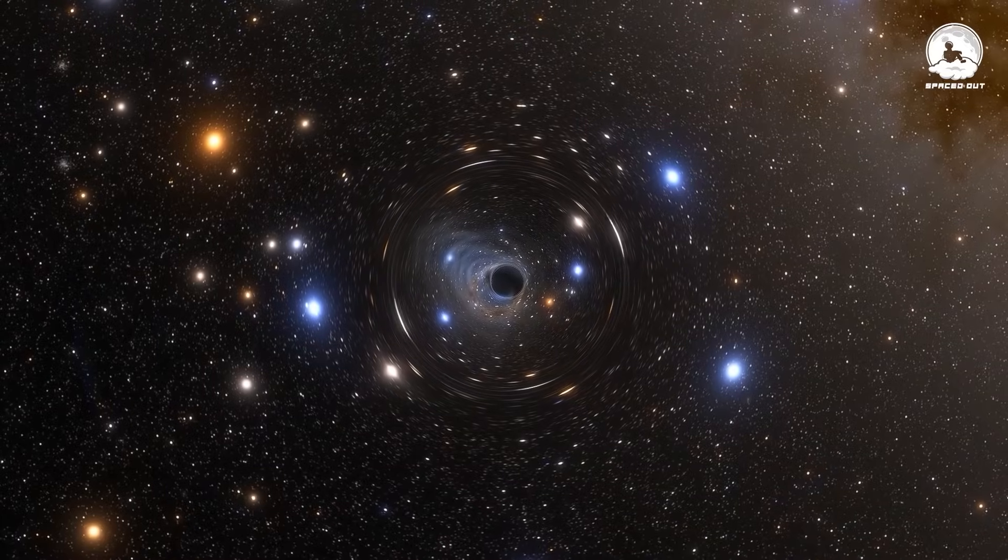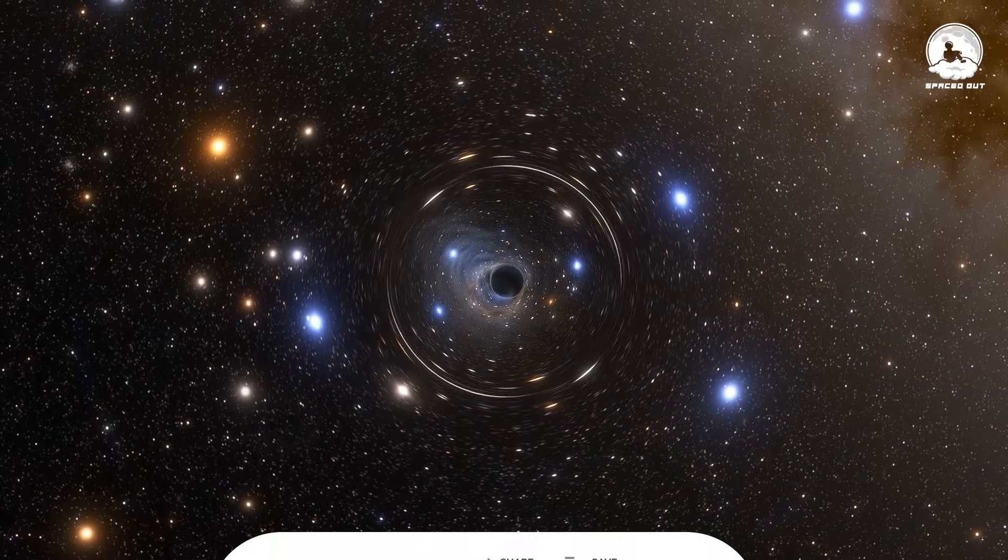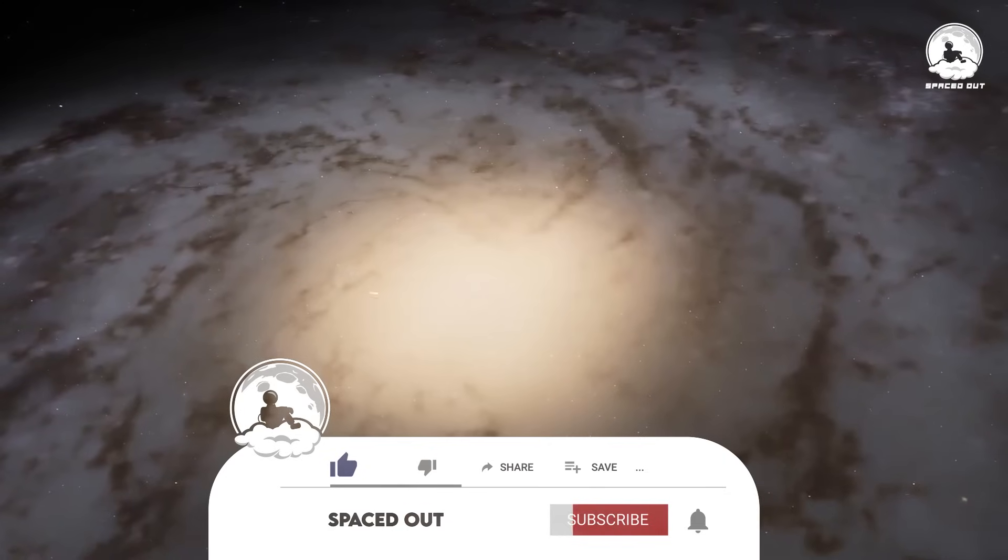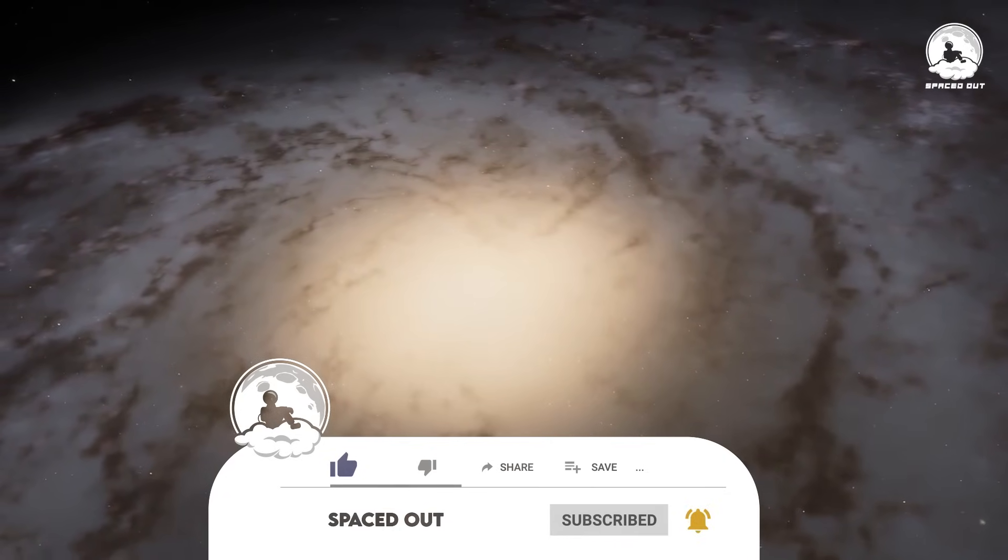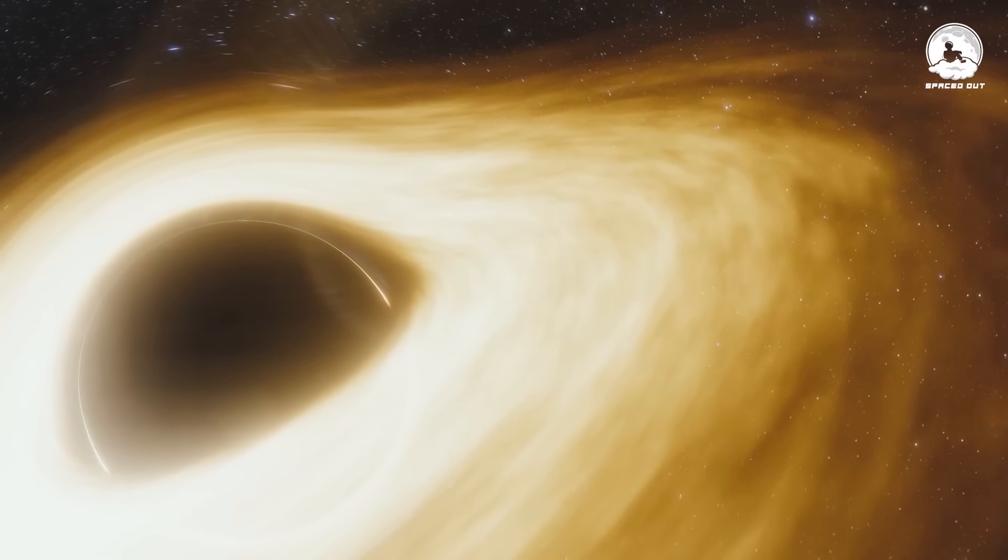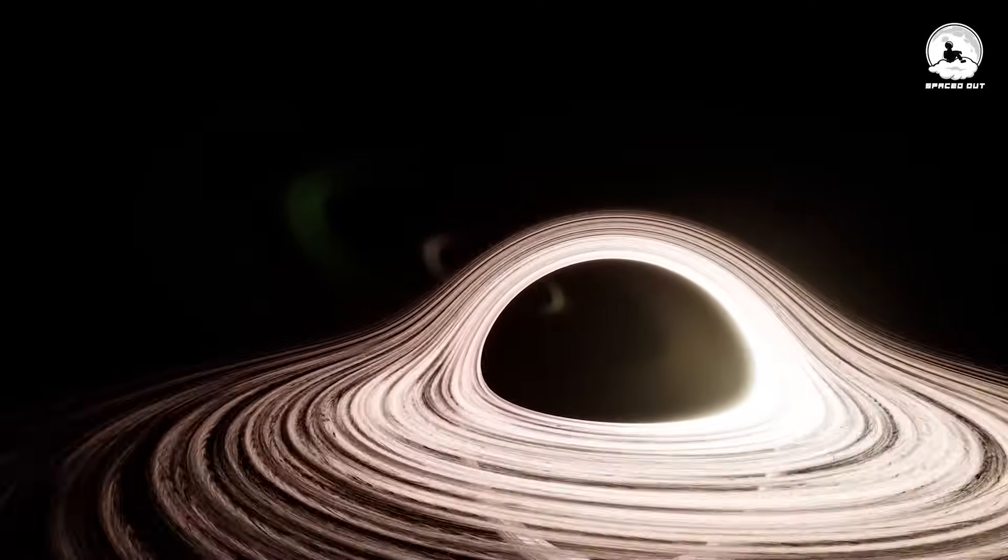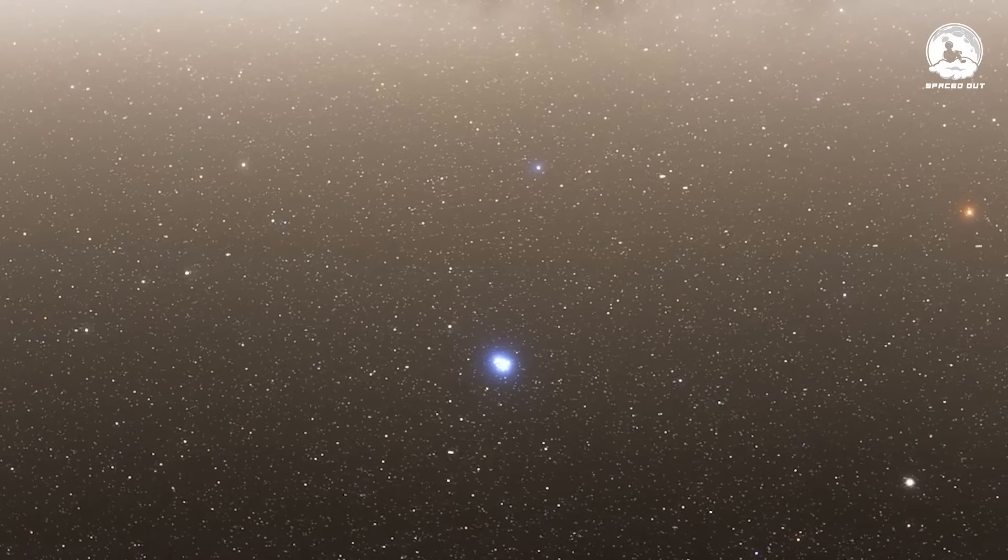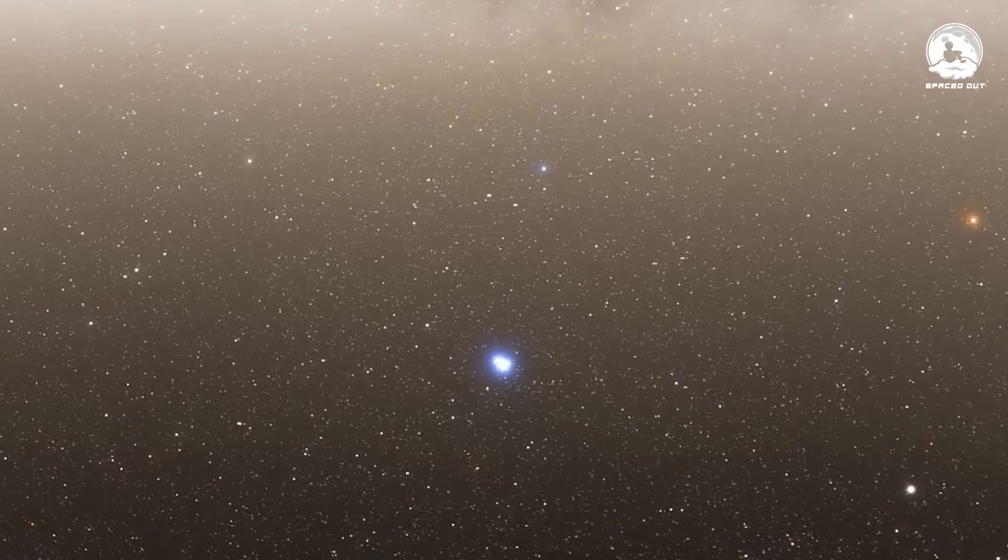Although the actual hull of the black hole isn't visible in these images, what becomes apparent is a brightly shining ring. This ring is formed by intensely heated matter in the vicinity of the black hole, offering a glimpse into these mysterious cosmic phenomena.